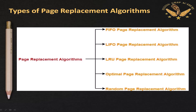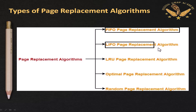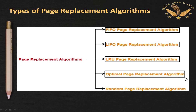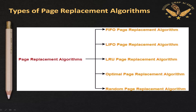The types of page replacement algorithms are: first, First In First Out (FIFO); second, Last In First Out (LIFO); third, Least Recently Used (LRU); fourth, Optimal page replacement algorithm; and fifth, Random page replacement algorithm. These are the five different types used in operating systems.